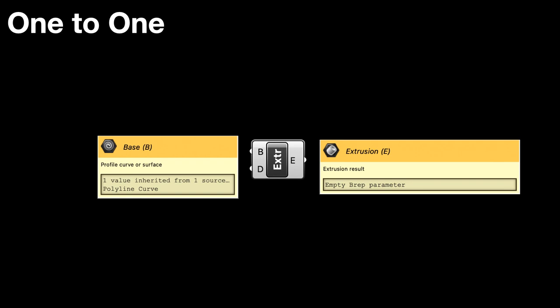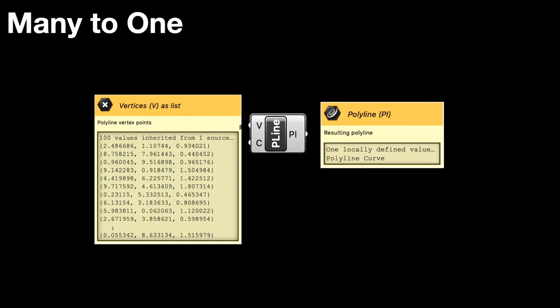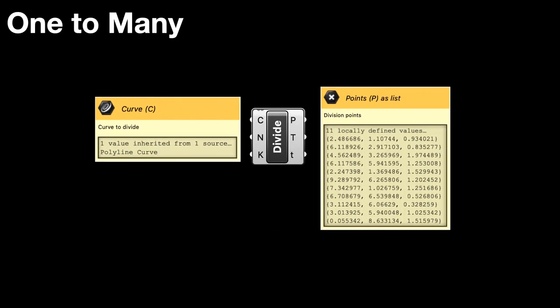How do you know what kind of component you're dealing with? You hover over the inputs and outputs. If it doesn't say list or tree, you're dealing with item access. So this is an example of item access on the left and item access on the right. We call that a one-to-one. If you see list on the left and no list on the right, you're dealing with a many-to-one component. And if you see list on the right, you're dealing with a one-to-many component. So a component like divide takes in a single item and generates a list of data on the output.